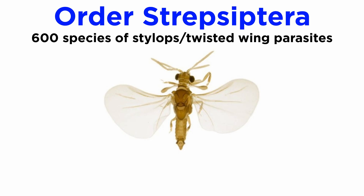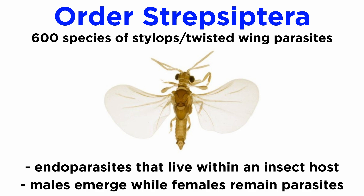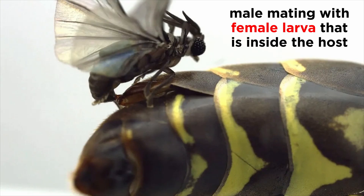The 600 described species of order Strepsiptera are commonly referred to as stylops, or twisted-wing parasites, and are noted for their strange life history. They are endoparasites that live most of their lives within an insect host. Males emerge from their hosts with a single pair of wings, and females live their lives within the host. The flying males mate with larviform females that are still inside their host, and the developing young often eat their mother, emerge from her body into the host, and then try to find a more suitable host.